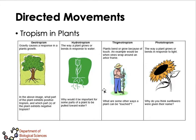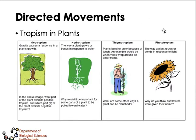In plants, directed movements are called tropisms — the movement of a plant or plant parts toward the source of a stimulus. Examples include geotropism, the movement of roots toward the source of gravity; hydrotropism, the movement of roots toward the source of water; thigmotropism, where tendrils locate hard objects to cling to for support; and phototropism, the movement of plant parts toward the source of light.